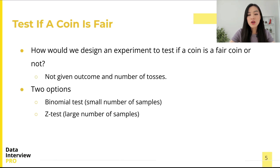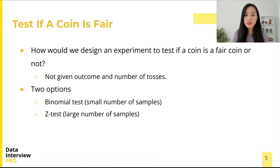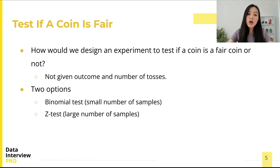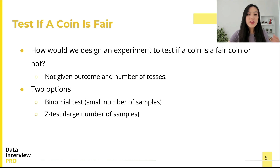Now let's take a look at how to design an experiment to test whether or not a coin is fair. Unlike many coin problems, we are not given the outcome or number of tosses. To test if a coin is fair or not, we have two different tests we can use. One option is to use a binomial test when we have a small number of samples; the other option is to use a z-test with a large sample size.